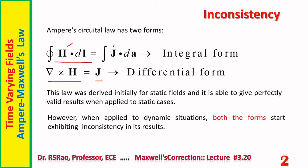But when Ampere's law is applied to dynamic situations, both forms start exhibiting certain inconsistency in their results. After finding this inadequacy in dealing with dynamic situations, the law was modified by Maxwell, resulting in Ampere-Maxwell's Law. Before going to the correction, let us first understand the inadequacy or inconsistency in the results given by this particular law.